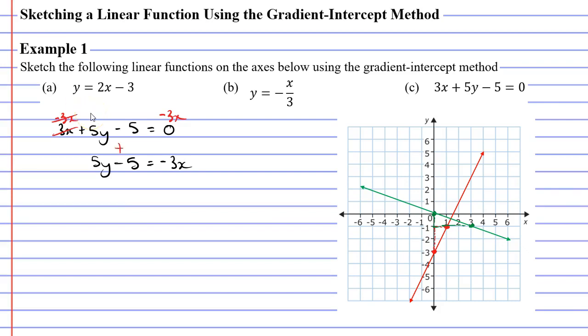I'm also going to add the 5 on both sides in order to cancel the minus 5. The reason I'm doing this is because I'm trying to isolate y on the left. I'm now going to have 5y equals negative 3x plus 5.